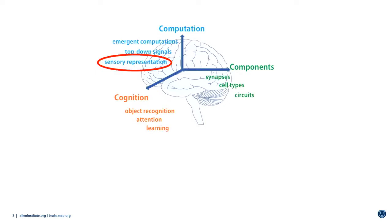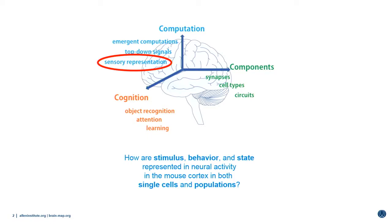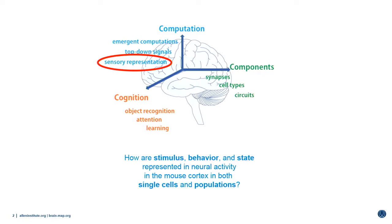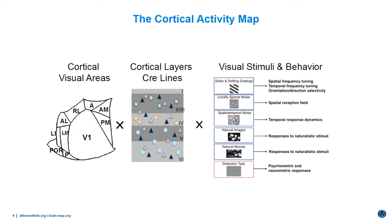Specifically, we ask how stimulus, behavior, and state are represented by neural activity in the mouse cortex in both single cells and neural populations. This project is called the Cortical Activity Map. The CAM is a neurophysiological survey across areas, layers, and predefined cell types to measure activity in response to a broad array of visual stimuli, mapping the spatiotemporal receptive field and responses to natural images and movies in the same population of cells — something that's never been done before.